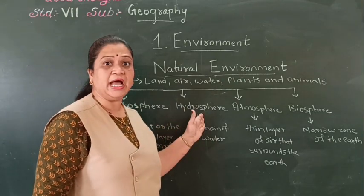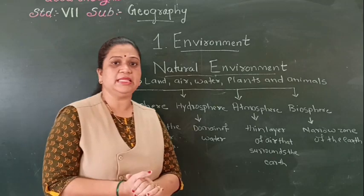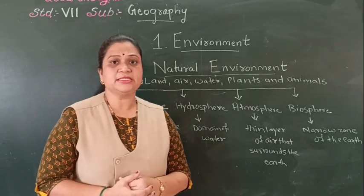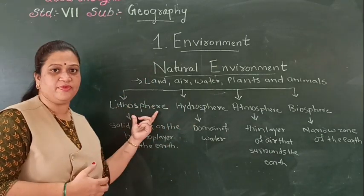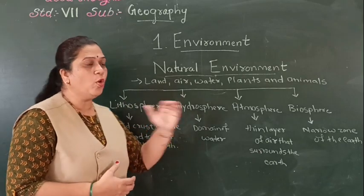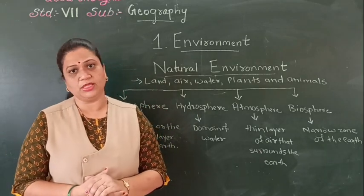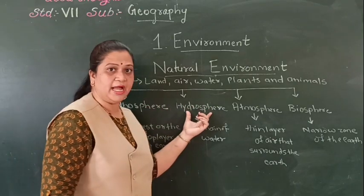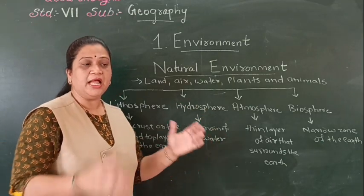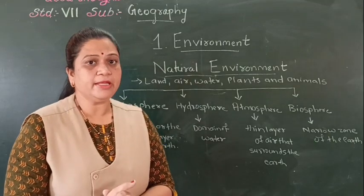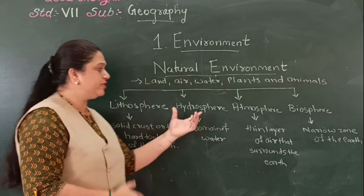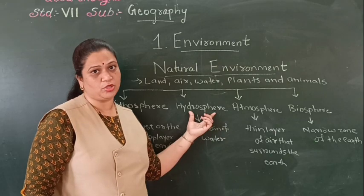The second one is the hydrosphere. Our earth is divided into two parts: land and water. Land is the solid surface which belongs to the lithosphere, referred to as the continents. The hydrosphere is nothing but the domain of water. Seventy-one percent of our earth is covered with water, so this sphere covers a large portion of the earth's surface.